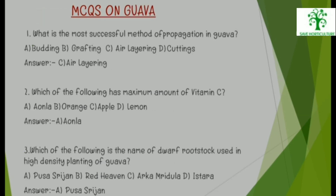Now let's see some MCQs on Guava. 1. What is the most successful method of propagation in Guava? Options: Budding, Grafting, Air Layering, or Cutting. The right answer is Air Layering.